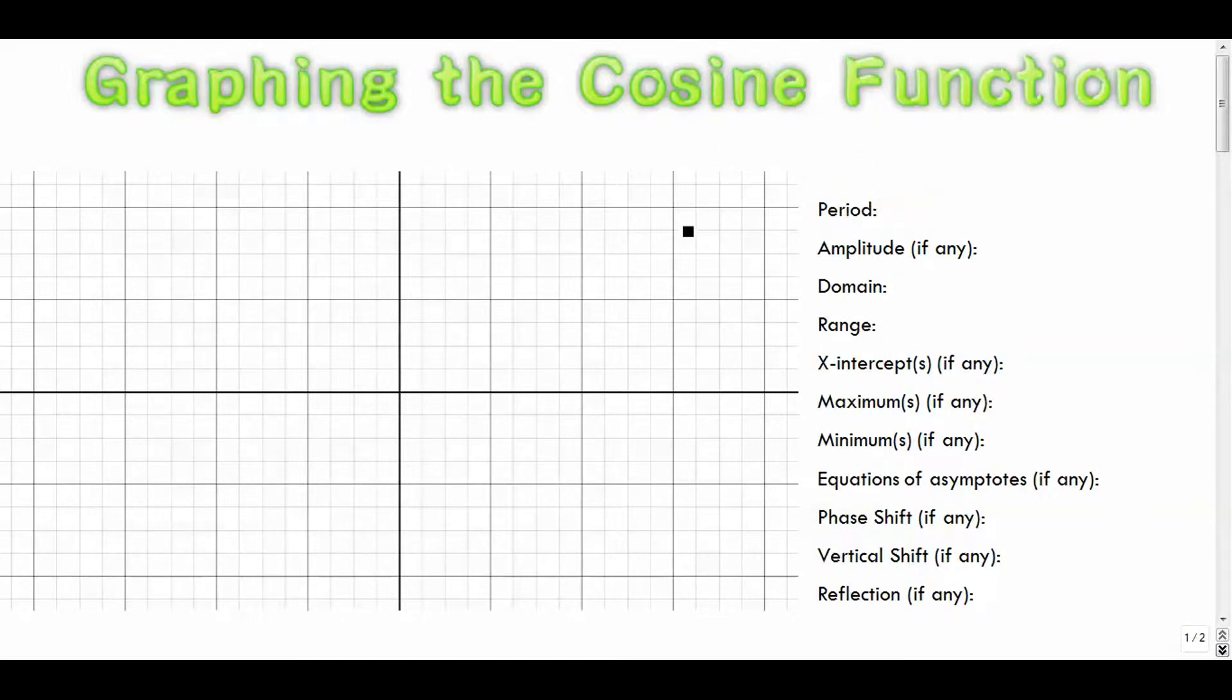So what you see in front of you here is a blank graph that we're going to fill up with the cosine function. I'm just going to graph basically one cycle of it, and then I also have these sort of fill in the blanks over here. A couple of them down at the bottom aren't really going to apply to us right now, but we'll come back to those in our transformation videos when we start talking about how we change these trig function graphs a little bit.